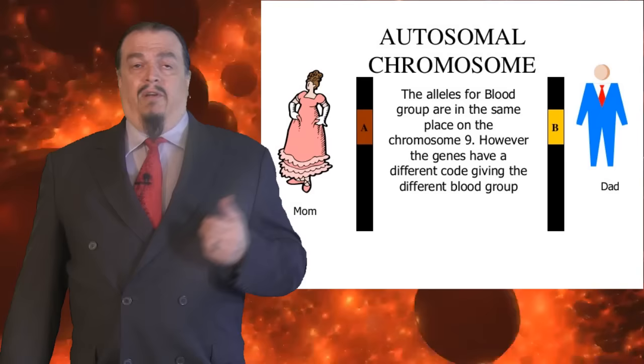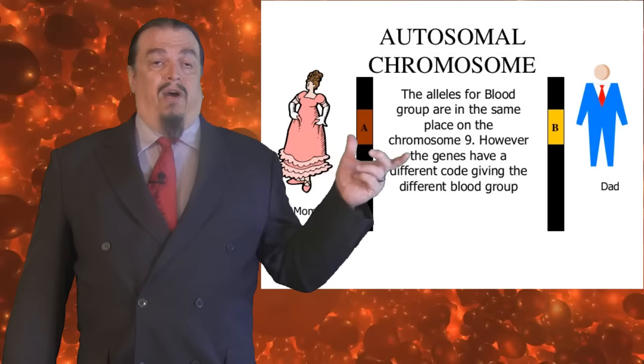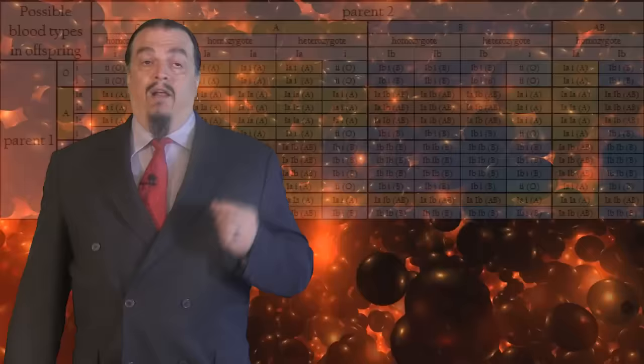We talked about one trait in the last video that is located on just one gene but actually has more than two alleles for the same trait: blood type. The point is that blood type would not have been as simple to predict with Mendelian inheritance. First of all, these two parents both have dominant alleles — A and B are both dominant. The offspring will inherit both dominant alleles equally as the AB blood type; they are what they call co-dominant. But blood type is even more complicated than that because it also has a third recessive allele, the O allele.